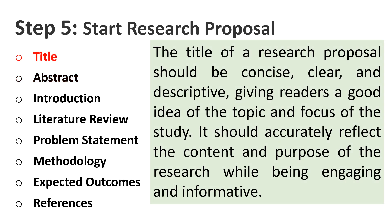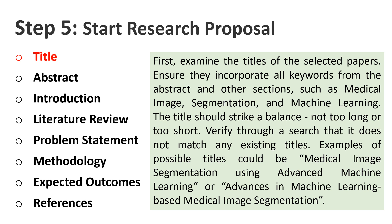The title of a research proposal should be concise, clear, and descriptive, giving readers a good idea of the topic and focus of the study. It should accurately reflect the content and purpose of the research while being engaging and informative. First, examine the titles of the selected papers. Ensure they incorporate all keywords from the abstract and other sections, such as 'medical image segmentation' and 'machine learning.' The title should not be too long or too short, and verify through a search that it does not match any existing titles. Examples include: 'Medical Image Segmentation Using Advanced Machine Learning' or 'Advances in Machine Learning-Based Medical Image Segmentation.'